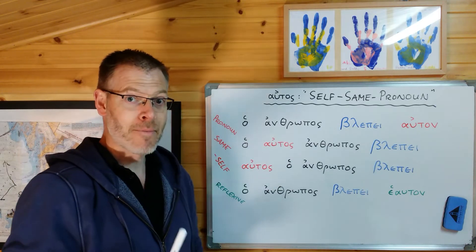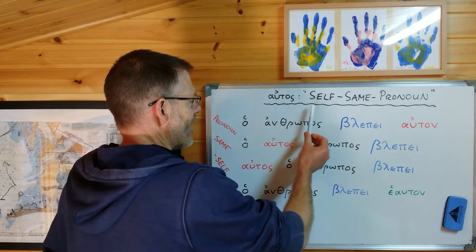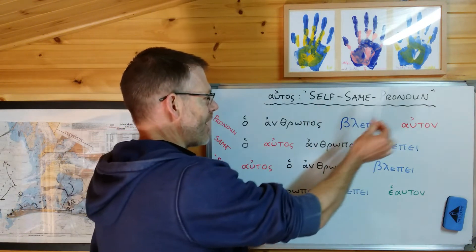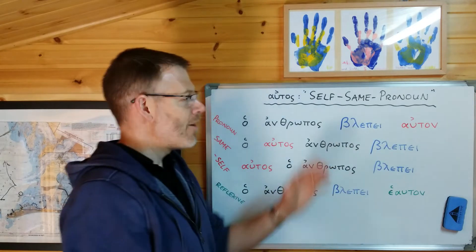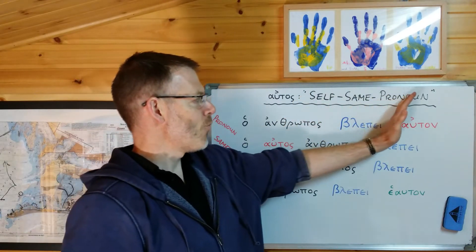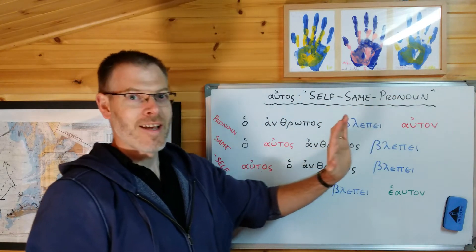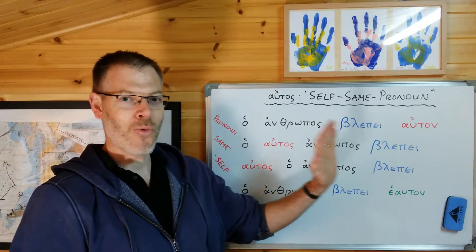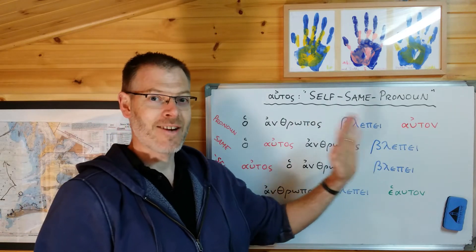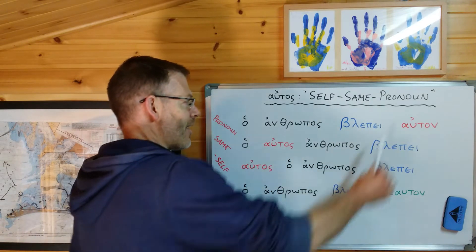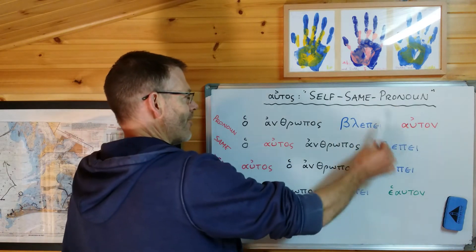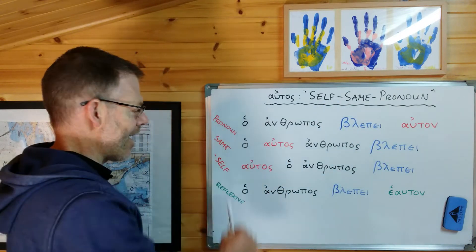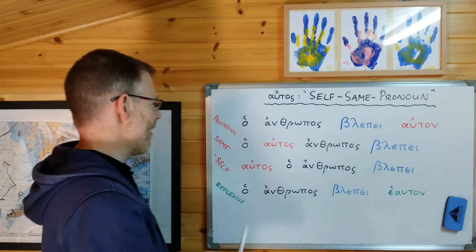The mnemonic for you is this little phrase: self, same, pronoun. Those three words are little reminders of the three ways in which this pronoun can be used. We start with pronoun, then do same, and do self. We'll go down here and look at them one at a time and I'll show you what I mean.